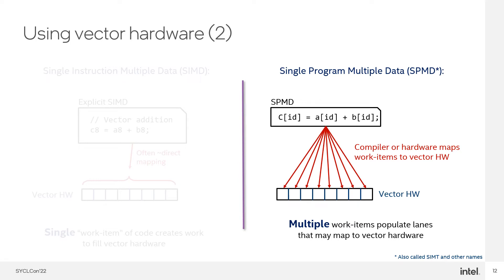Explicit SIMD is in contrast to another programming model, which we'll call Single Program Multiple Data, or SPMD. In this style of programming, code is written from the perspective of a single lane or component of the vector, and multiple instances of the program run at the same time, each filling up a different lane of the vector hardware. This is a really critical concept for modern accelerator programming, because it offers a number of advantages that we'll touch on soon. In SPMD, multiple instances of the program run — in some sense together or at the same time — to fill up the lanes in the vector hardware.